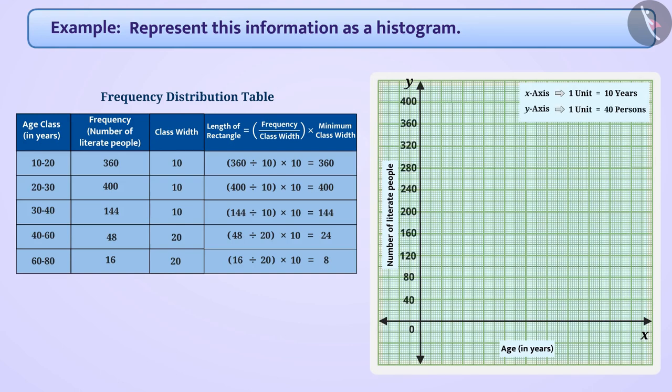Since we are starting with 10 on the x-axis, we will thus make a kink symbol indicating that we are not showing numbers from 0 to 10. Now, we will draw the rectangle by keeping the width of the rectangle 10 and the length of the rectangle 360 for the age group 10 to 20.